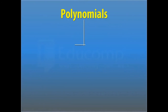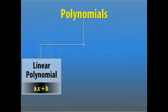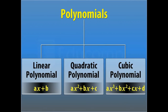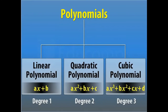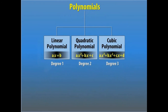Depending on their degree, polynomials are classified into three types: linear, quadratic, and cubic. A polynomial whose degree is 1 is a linear polynomial. A polynomial whose degree is 2 is a quadratic polynomial. A polynomial whose degree is 3 is a cubic polynomial. Looking at the general form, a polynomial in one variable x with degree n can be represented by this expression.